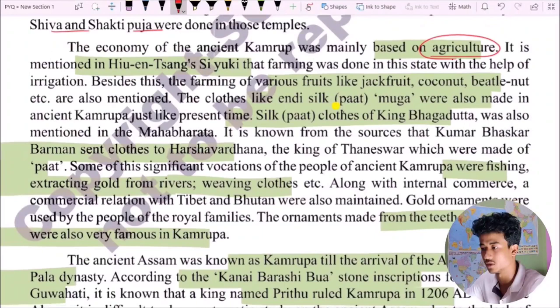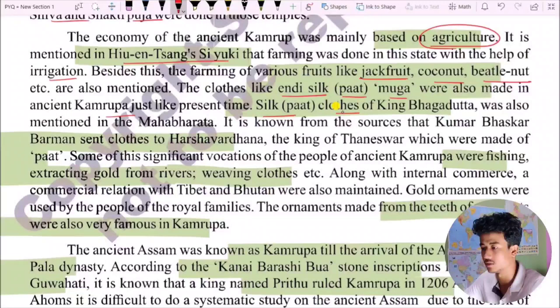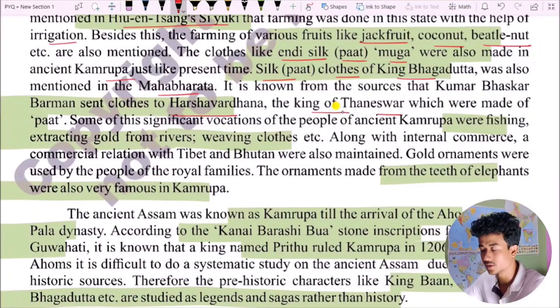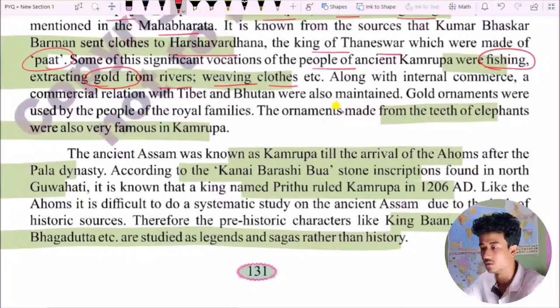The inhabitants of ancient Assam were worshippers of nature. The influence of Shiva and the goddess can be seen in the ancient temples, as mostly Shiva and Shakti puja were done in those temples. The economy of ancient Kamarupa was mainly based on agriculture. It is mentioned in Xuanzang's writings that wet farming was done in the state with the help of irrigation. Farming of various fruits like coconut and betel nut was also mentioned.